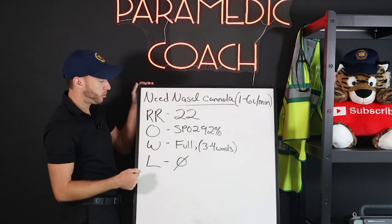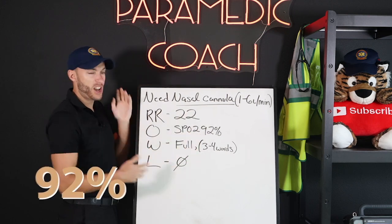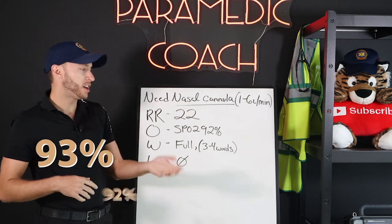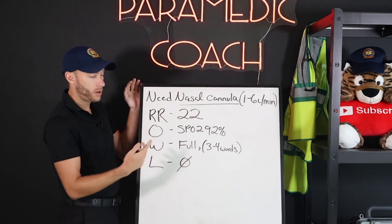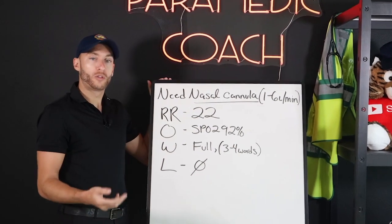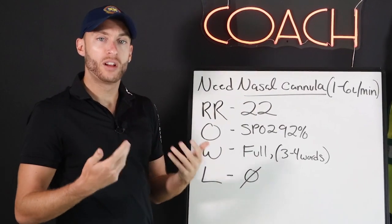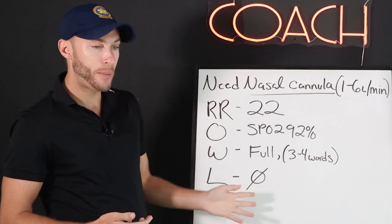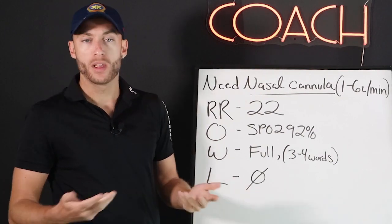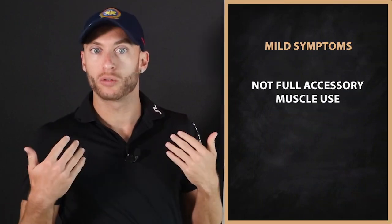Could this be 24? Sure. It could be 24, SPO2 92 — in that range, could be 93, 92. Speaking full sentences, maybe you see some mild symptoms, right? So we're talking about labor. I put zero, but maybe you're seeing some mild symptoms, but you're not seeing full-on accessory muscle use.